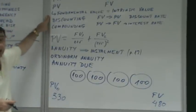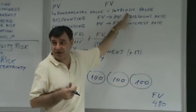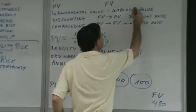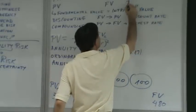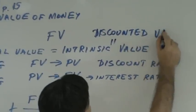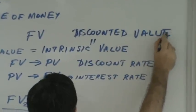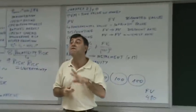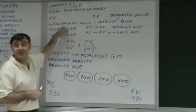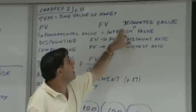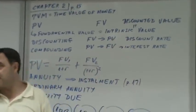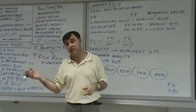Fundamental value is the same as intrinsic value, which is the same as discounted value. So you have four different terms — present value, fundamental value, intrinsic value, and discounted value — all meaning the same thing: the present value of future cash flows.